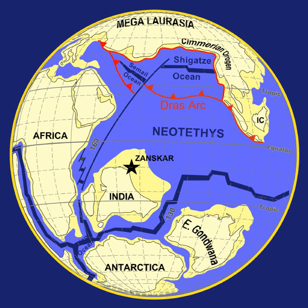Earth was initially molten due to extreme volcanism and frequent collisions with other bodies. Eventually, the outer layer of the planet cooled to form a solid crust when water began accumulating in the atmosphere. The Moon formed soon afterwards, possibly as a result of the impact of a planetoid with the Earth.